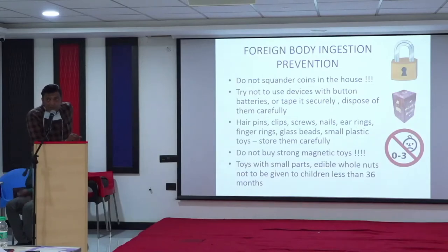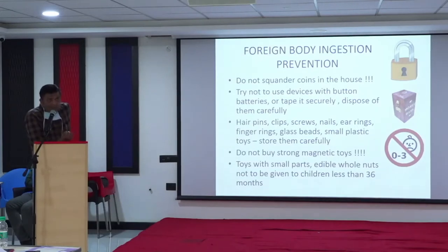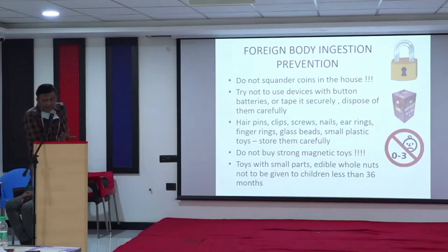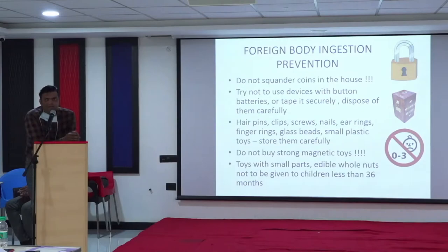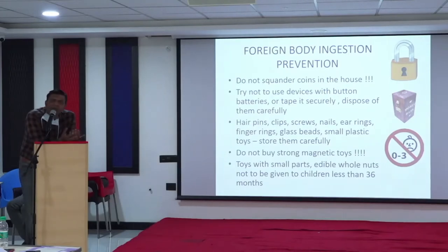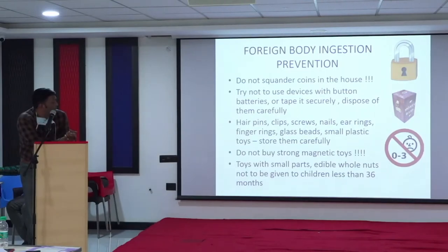Foreign body ingestion prevention: do not squander coins around the house. Even though we are going more electronic with less change, vegetables shopping still produces small coins - always dispose them in a safe place or keep a coin bank. Do not use devices with button batteries left accessible, including car keys. Hairpins, clips, screws, nails, earrings, finger rings, glass beads and plastic toys - up to the age of 36 months do not give children any items with small parts. Nuts and peanuts can also be dangerous foreign objects. Do not buy strong magnetic toys.